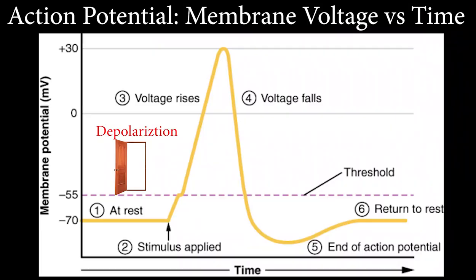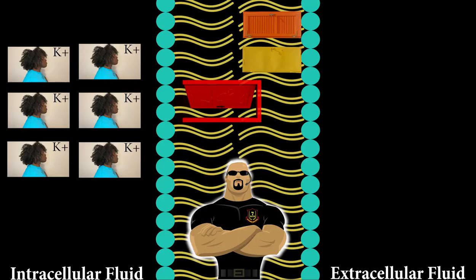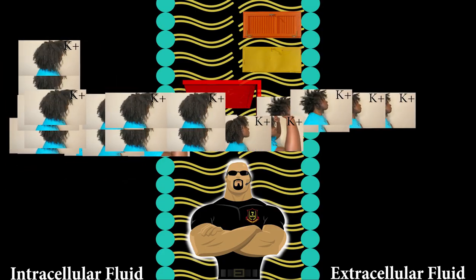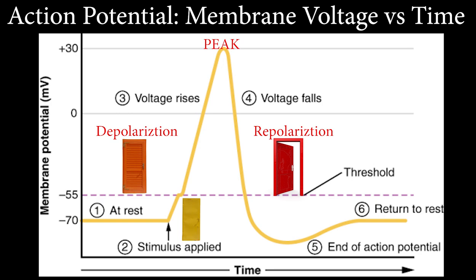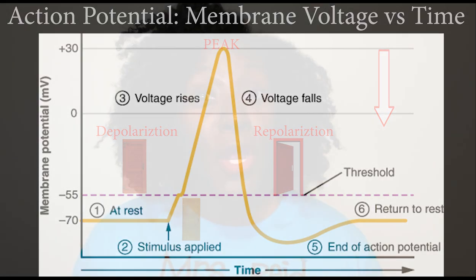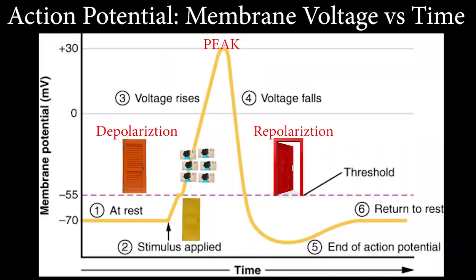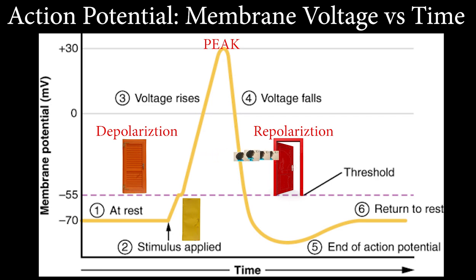Voltage-gated channels open and close based on different voltages. At the peak of positive 30 millivolts, the voltage-gated sodium channel closes. But at positive 30 millivolts, this causes the voltage-gated potassium channels to fly open. Now that the potassium channels are fully open, potassium rushes out of the cell, repolarizing the cell — the inside of the neuron is becoming more negative again. The potassium channel doesn't close quickly enough, causing too much potassium to exit the cell, and this causes hyperpolarization.